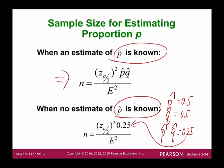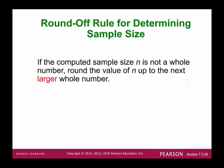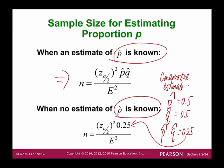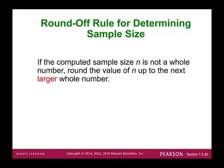That's why p-hat times q-hat becomes 0.25 — and that's why we use 0.25 in the formula. Setting p-hat = q-hat = 0.5 gives a conservative estimate, because 0.25 is the maximum value you can get when you multiply p-hat times q-hat, giving us the biggest sample size. The bigger the sample size, the better the result. When computing sample size n, if the result is not a whole number, always round up to the next larger whole number.